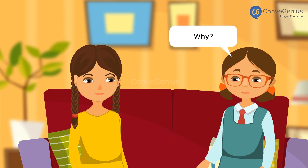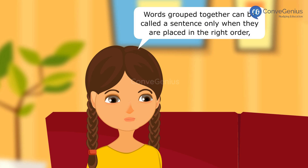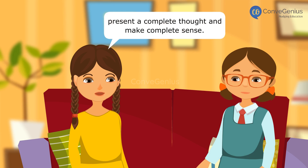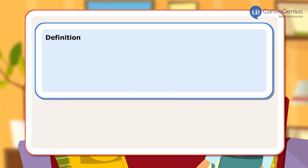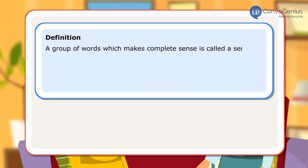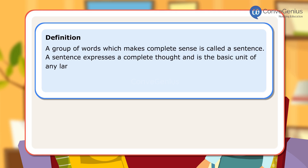Why? Words grouped together can be called a sentence only when they are placed in the right order, present a complete thought, and make complete sense. Definition: A group of words which makes complete sense is called a sentence. A sentence expresses a complete thought and is the basic unit of any language.